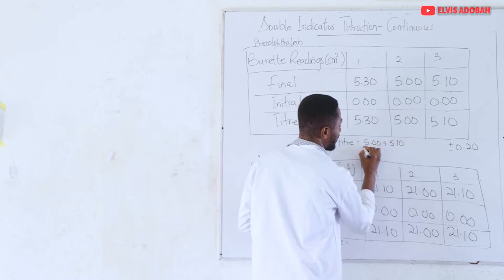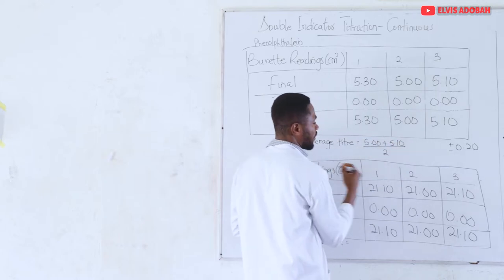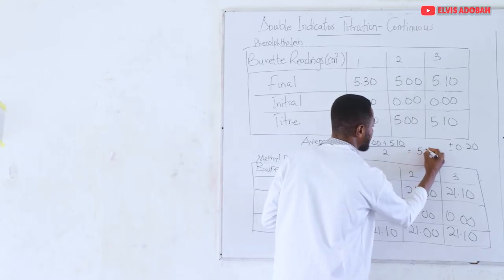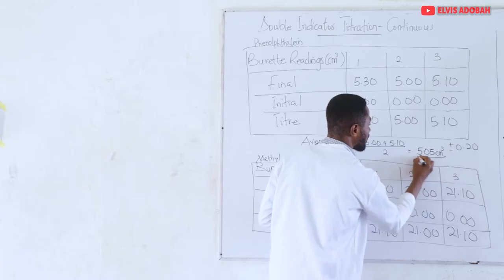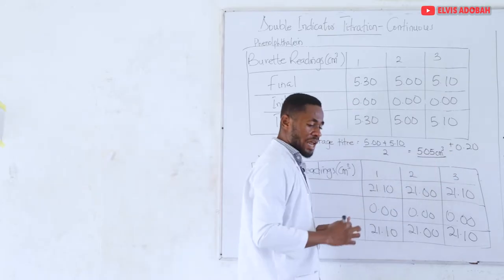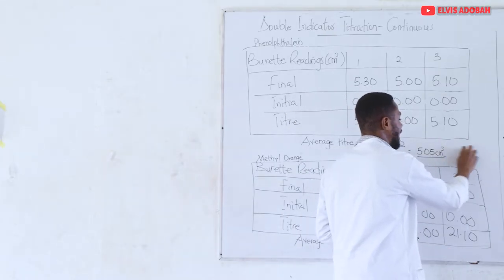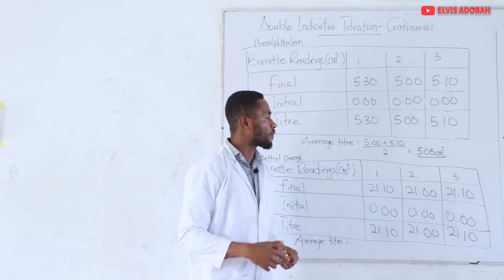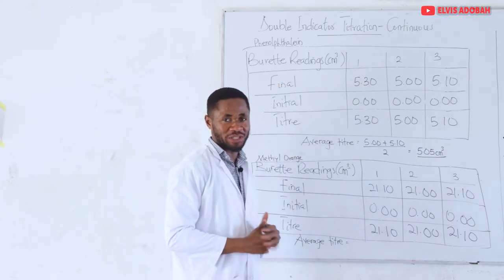Dividing 5.00 and 5.10 by two gives an average of 5.05 cm³. That will be my average titre for the phenolphthalein titration.